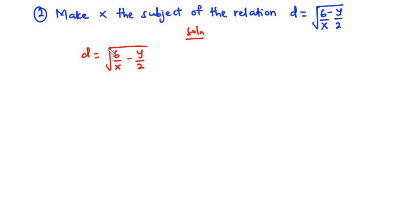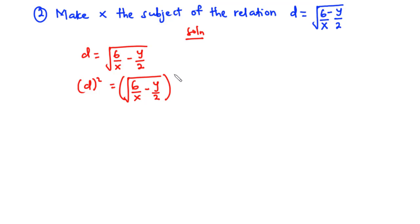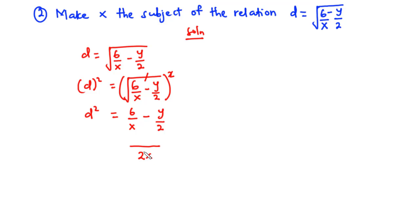To make x the subject we need to eliminate the square root, so we square both sides: d squared equals 6 over x minus y over 2. Now let's combine these two terms by finding the LCM. The LCM of x and 2 is 2x. So 2x divided by x is 2, and 2 times 6 is 12; 2x divided by 2 is x, and x times y is xy.